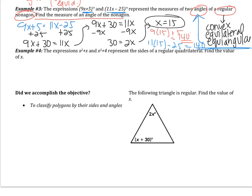Let's see how we did. So reading the problem, it says the expressions x squared plus x and x squared plus 4 represent the sides of a regular quadrilateral. Find the value of x. Again regular, we wrote it above. It's convex, it's equilateral, it's equiangular. So equilateral, all the sides are going to be congruent. So I can do x squared plus x equals x squared plus 4. My sides are equal, so I can set them equal.